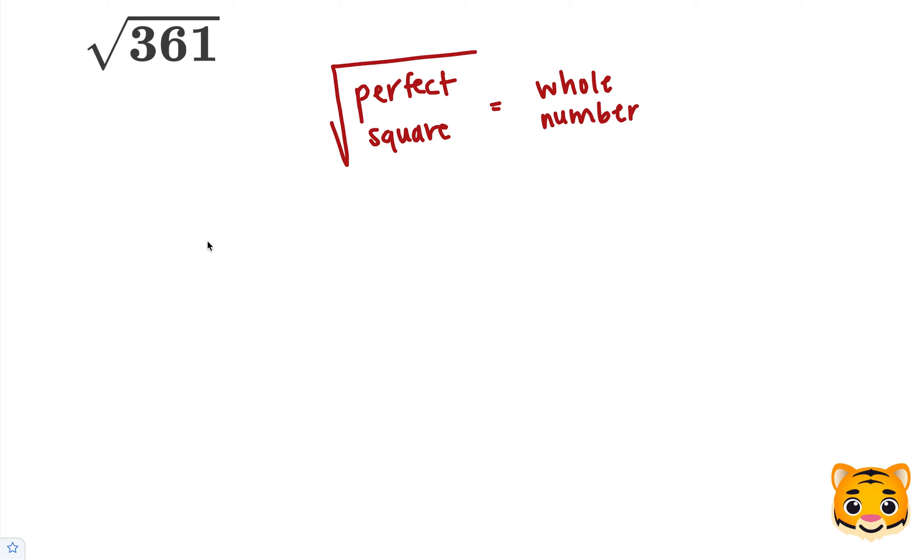Examples of perfect squares include 4, where the square root of 4 is equal to 2, or 16, where the square root of 16 is equal to 4.